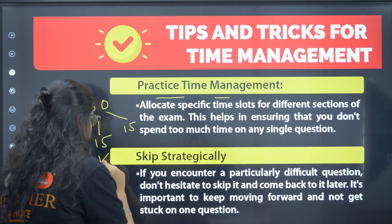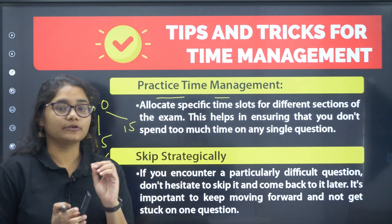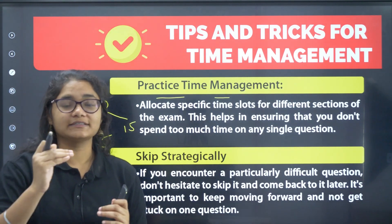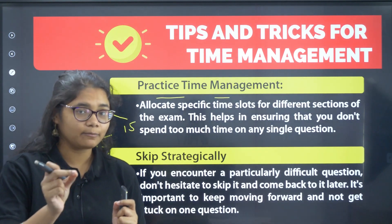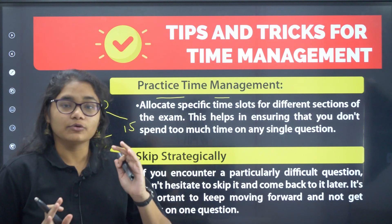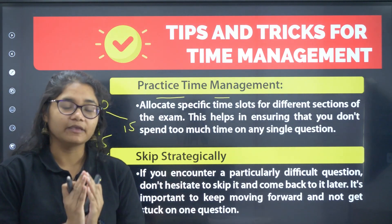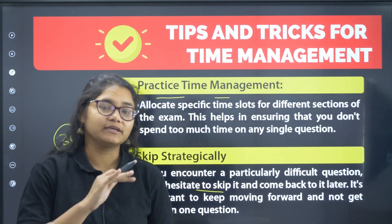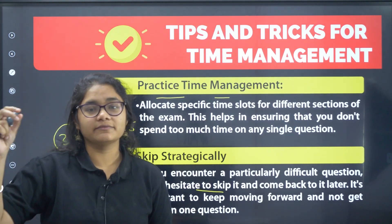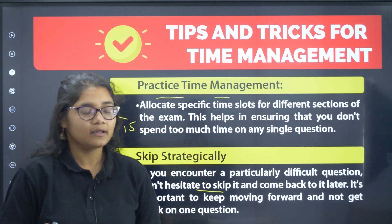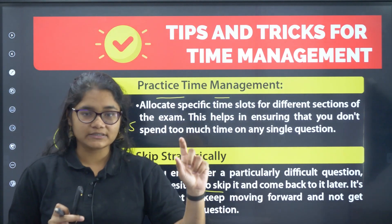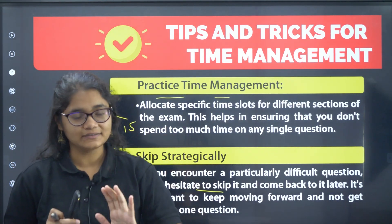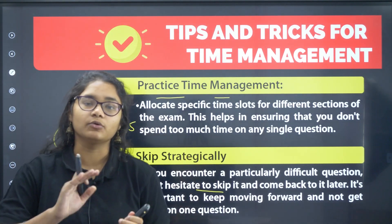The second tip is to skip strategically — this is very important. Do not get emotionally connected to any question. Even if you know a question, if it is lengthy and you cannot solve it at that point, skip it and come back if you have time remaining. If you stay engaged with a difficult question too long, you may miss easy questions at the end. Read a question: if it can be solved, solve it; if it is lengthy, keep it for last; if you cannot solve it, skip it.